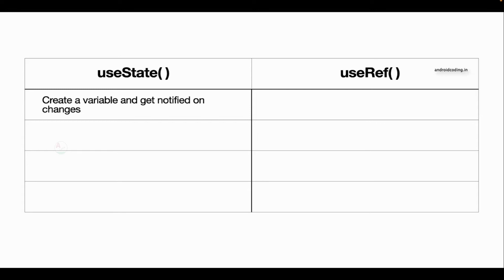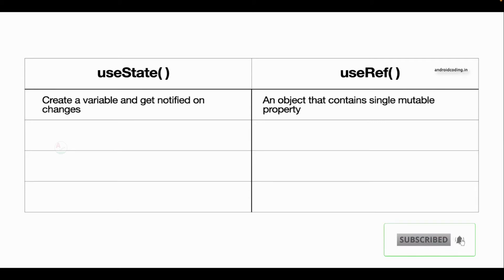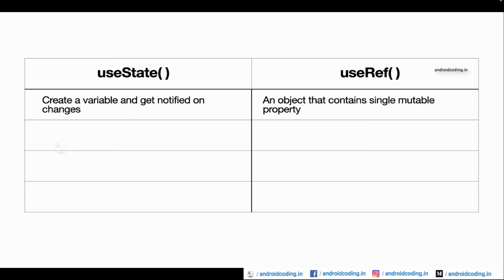In use state, a value change is notified to our text widget and re-rendered on screen. In use ref, an object contains a single mutable property — you can make the change, but it will not be displayed on the screen. The main difference is that use state re-renders the value onto the screen, while use ref does not re-render, though you can still observe the change.